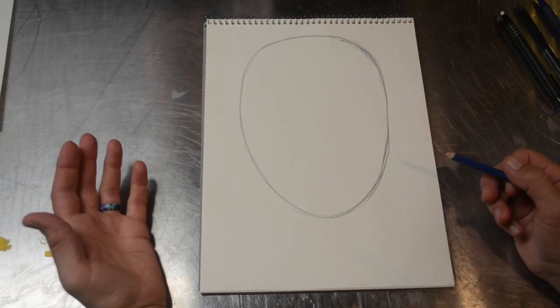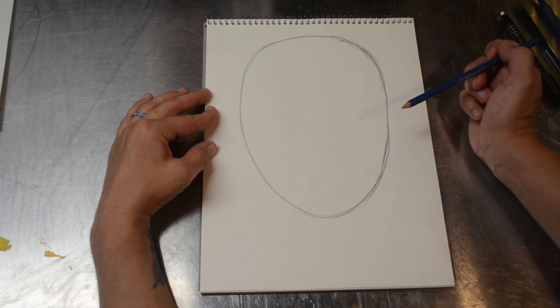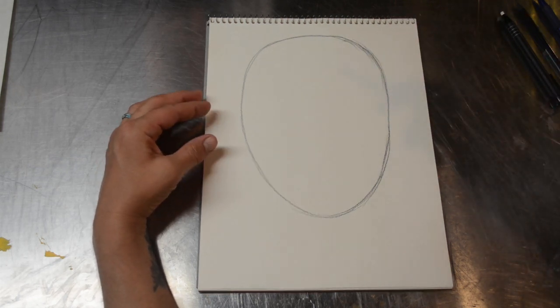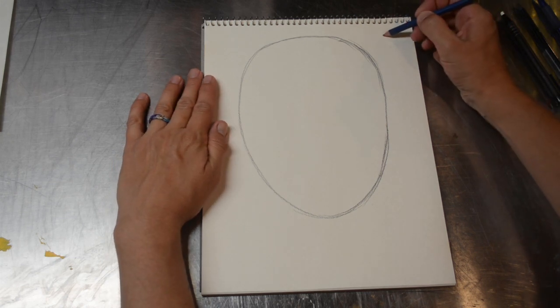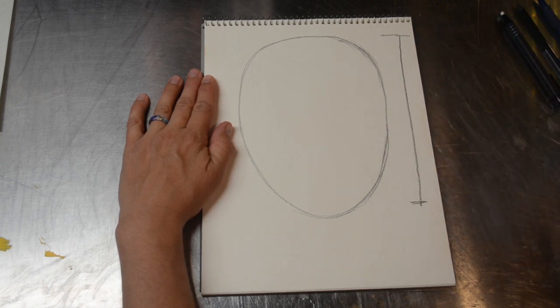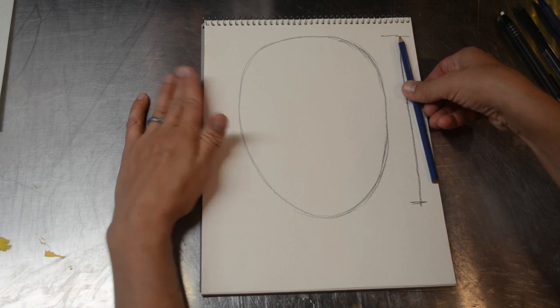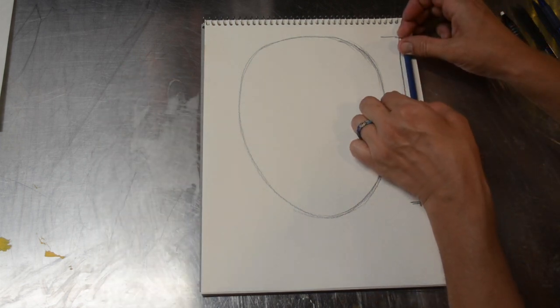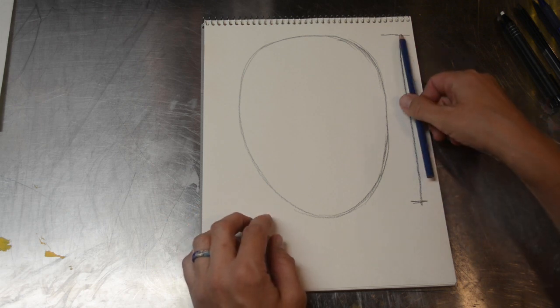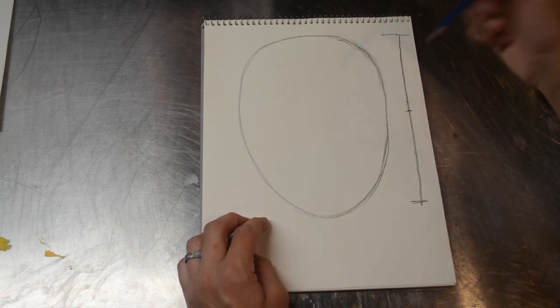Now rule number one. Where do we put the eyes? The eyes are often placed here accidentally because people think that the eyes are higher up than they are. Do not place the eyes here. The eyes actually go halfway down. So we have here is the top, here is the chin. Halfway down, it's about here. I'm going to measure with my pencil to make sure it's the same.